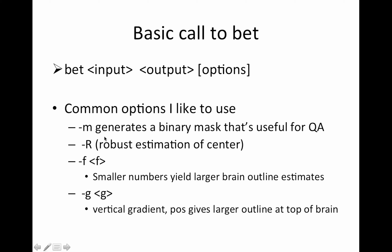Some common options I really like to use: minus M generates the binary mask, which I use for the QA step, though you can also just use the actual skull-stripped image. Minus R is the robust estimation of the center. The way BET works is it starts with a ball around the center of the brain, and this tessellated sphere slowly creeps outward until it hits a boundary and stops. If the center is estimated poorly, it doesn't do well. The minus R flag calculates the center a couple of times to improve that estimation.